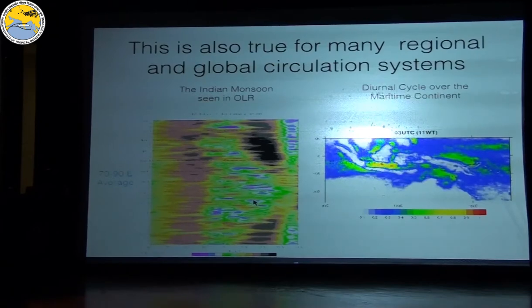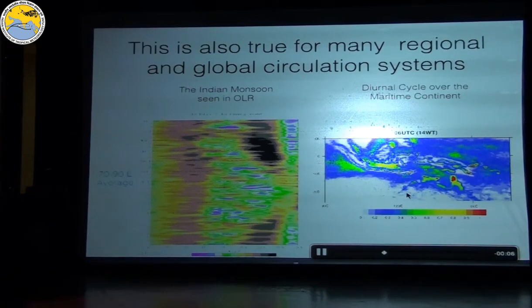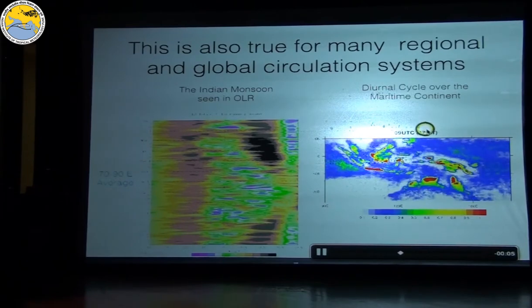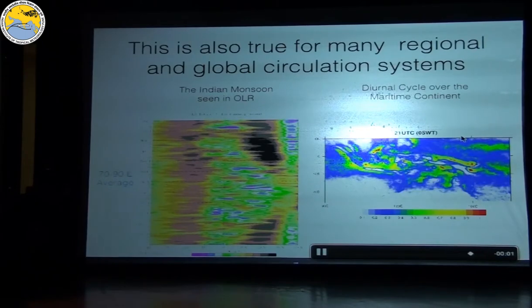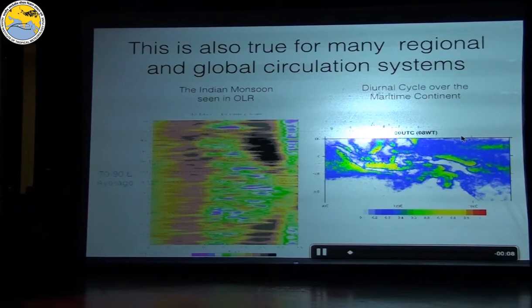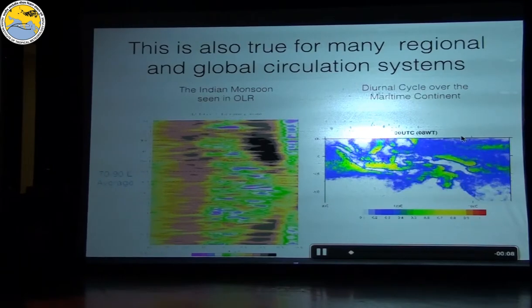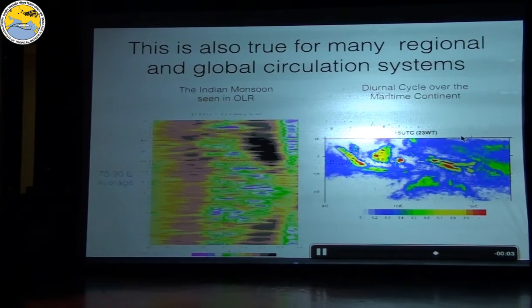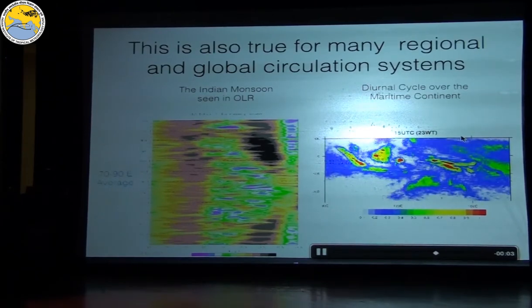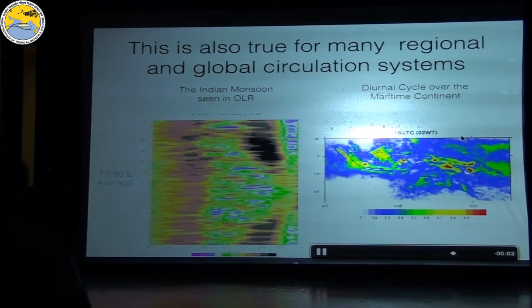Another example is the diurnal cycle of precipitation over the maritime continent. The movie shows very strong convection over the land masses during the day and afternoon, and very strong rainfall offshore of the islands in the evening and at night. There is a very smooth propagation of convection from land to ocean and back — almost like the land and ocean are breathing through convection, more or less every day during the appropriate season, shown here for December.